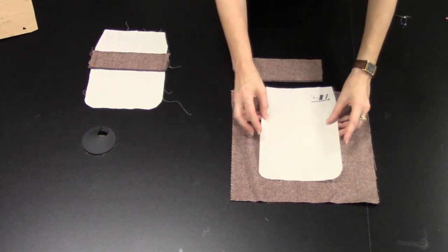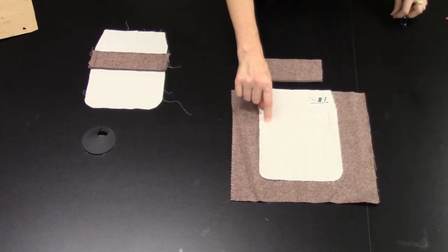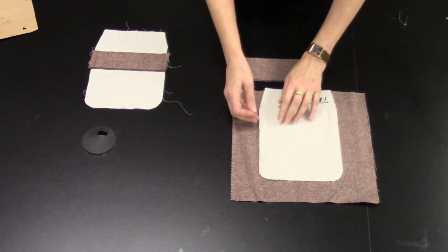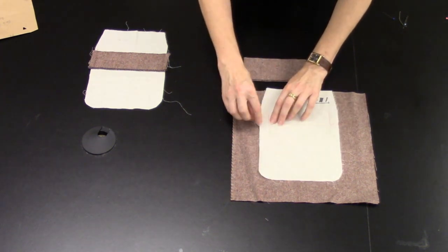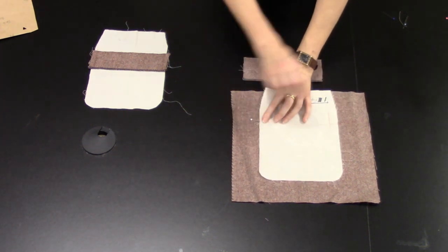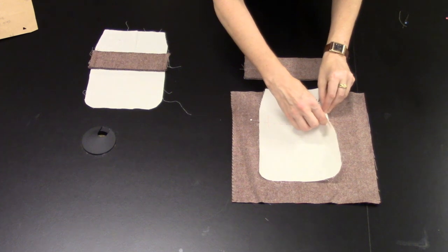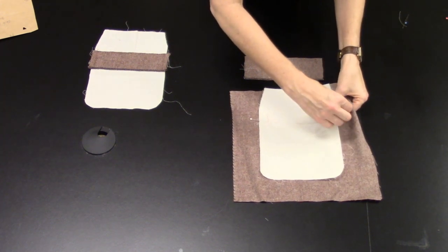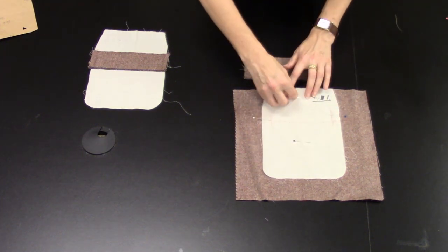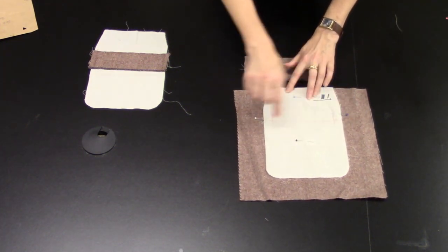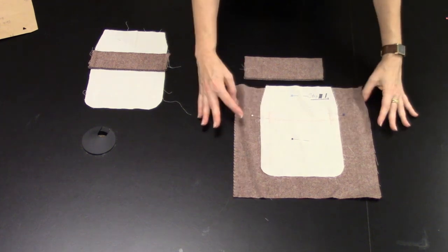Match up the pocket placement line on your pocketing piece with the pocket placement line on the trouser back. Match those up, pin that in place. We're going to be stitching through all these layers so I just put four pins in to keep that secure.